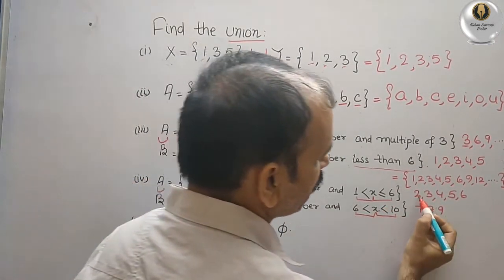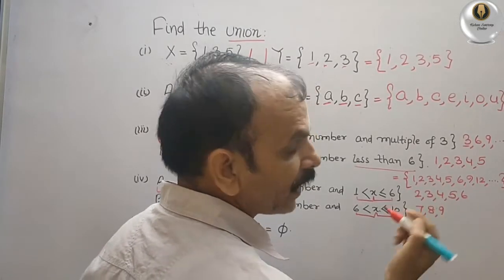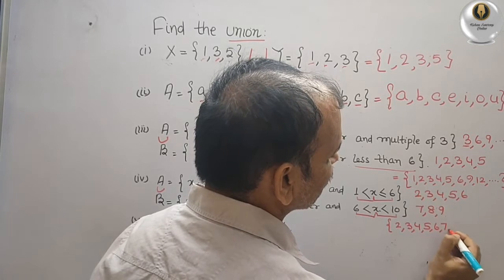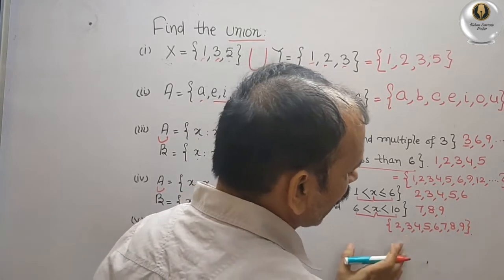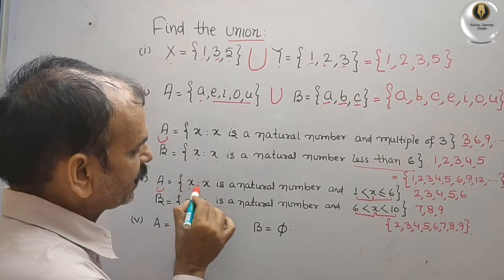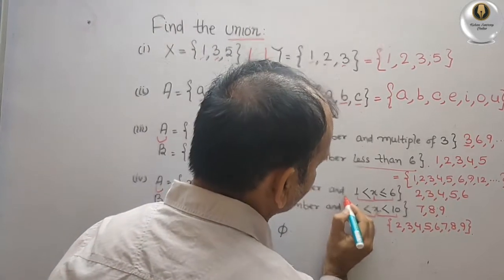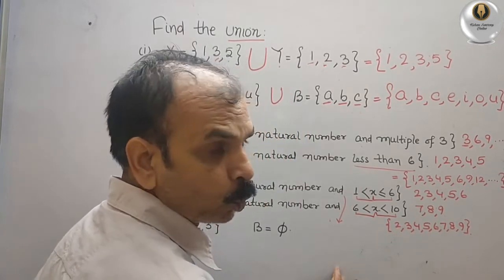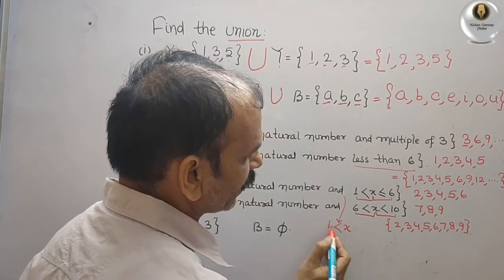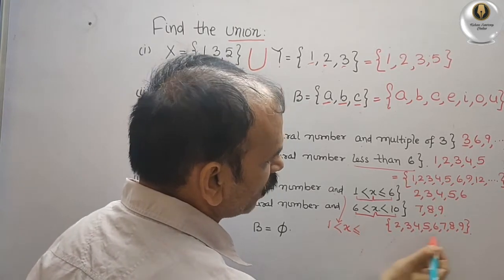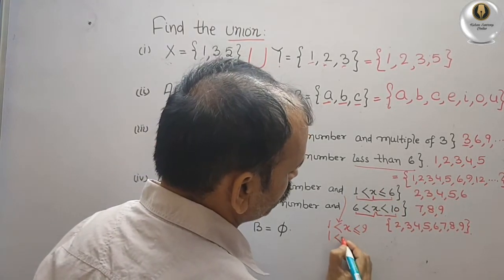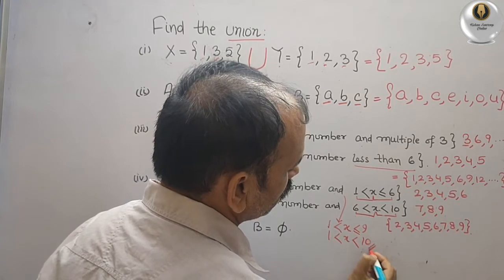The union of both A and B is {2, 3, 4, 5, 6, 7, 8, 9}. You can write it in roster form as {2, 3, 4, 5, 6, 7, 8, 9}, or in set builder form as: the set of all x such that x is a natural number and 1 < x ≤ 9, or equivalently x < 10. You can write it either way.